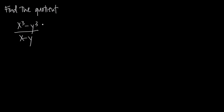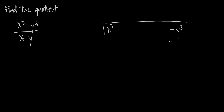As always, we take the numerator and that becomes the dividend — that's what we put inside our long division bracket. So we're going to put x cubed, leave some space, and then put minus y cubed over here. You'll see in a second why we need that space. Then we divide by the divisor, which is always the denominator: x minus y.